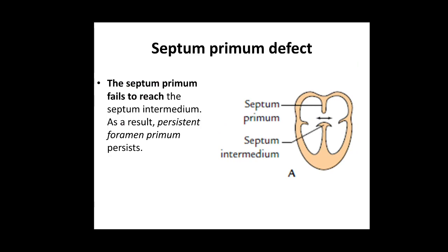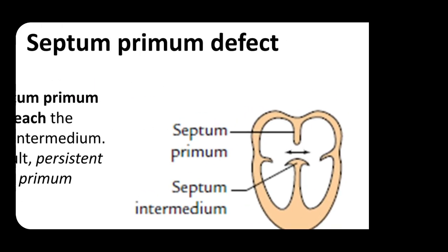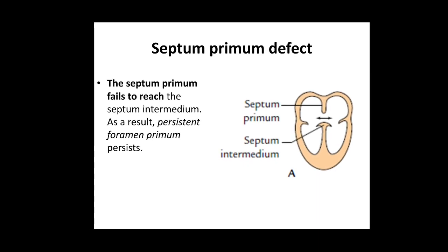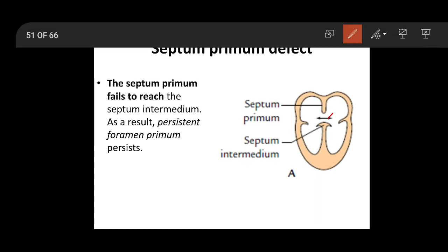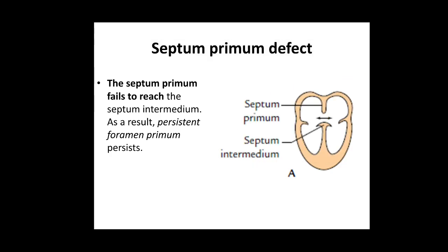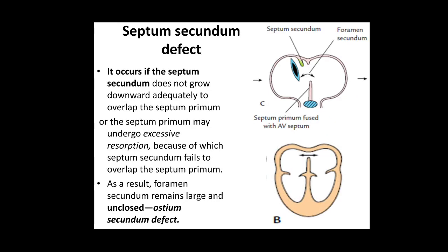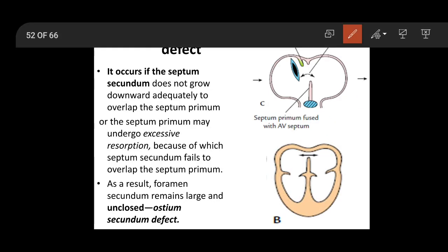Now some interatrial defects: First, the septum primum defect — if the septum primum fails to reach the septum intermedium, a gap remains and the foramen primum persists, called the septum primum defect or persistent foramen primum. Second, the septum secundum defect — the septum secundum grows downwards but does not reach the lower margin of the foramen ovale and fails to overlap the foramen secundum, leading to a large foramen secundum or ostium secundum defect.